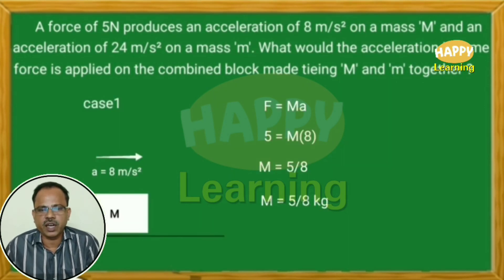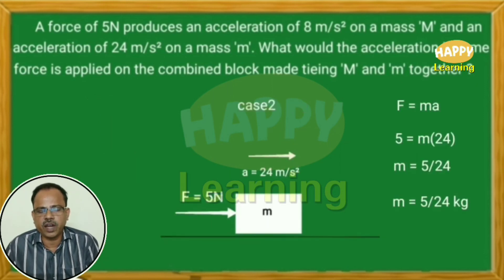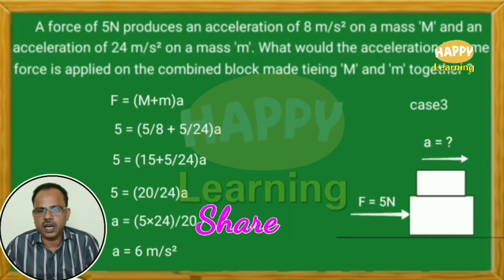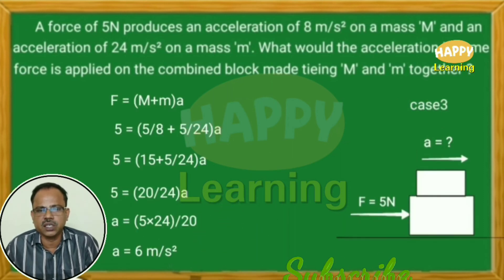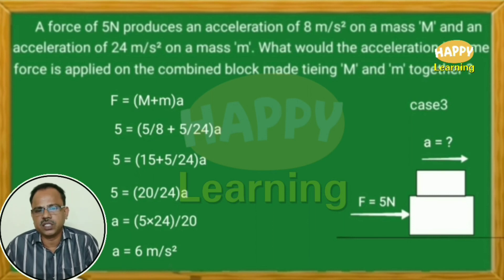So in case one, capital M equals 5/8 kg; in case two, small m equals 5/24 kg; and in case three, the acceleration of the combined block is 6 meters per second square. This is all for now; we will meet in the next class. Till then, take care. Thank you.